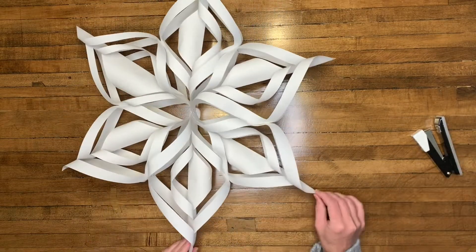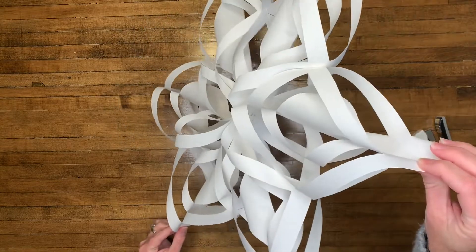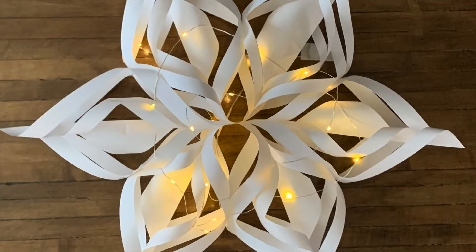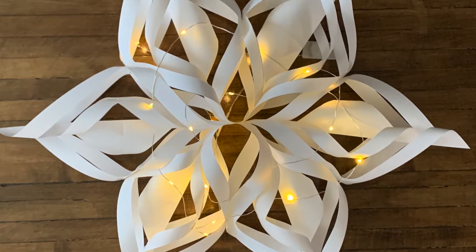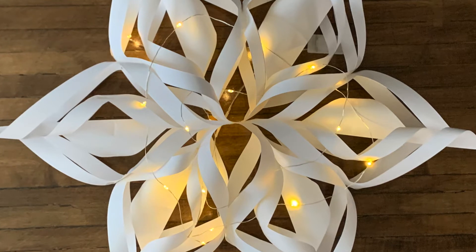Once your 3D snowflake is complete, you can punch a hole in one of the tops and string it with yarn so you can hang it. You can weave some lights through and then hang this in your window for you to enjoy. Happy creating!